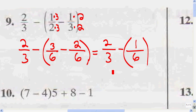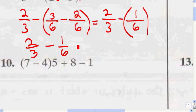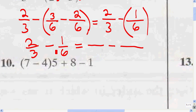Now I've got to remove the parentheses, so I've got 2/3 minus 1/6. Before I can combine these fractions, I've got to find the common denominator again. Draw a fraction line, a subtraction sign, then another fraction line. I need to find a number that both 3 and 6 are factors of.